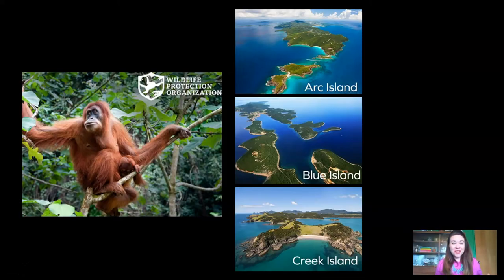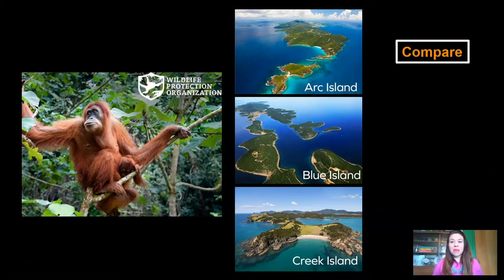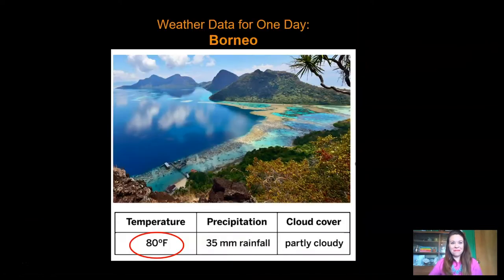So as you know, we're working with the Wildlife Protection Organization to look for the perfect place to put an orangutan reserve. We're trying to compare weather data from three islands to decide which place would be the hottest, rainiest, best place to put the orangutans. Remember that orangutans only live on two islands in the whole world, Borneo and Sumatra? Well, let's check out the weather data for one day on Borneo.